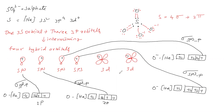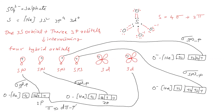One 3d orbital of sulfur and a 2p orbital of oxygen undergo lateral overlapping to give a pi bond — this is a d-pi–p-pi bond. Another 3d orbital of sulfur and another 2p orbital of oxygen form the second d-pi–p-pi bond.